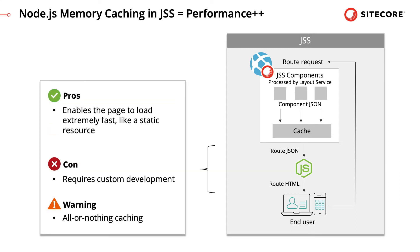If this is not enough, there is a custom option available too. This involves implementing caching at the Node Server. For every route where caching the entire page is acceptable, you can use Node's memory caching to save the HTML output of the route. Note that when a page is server-side rendered, Node renders the entire page as one block of HTML, not as individual renderings, which is why this is flagged as all-or-nothing caching.